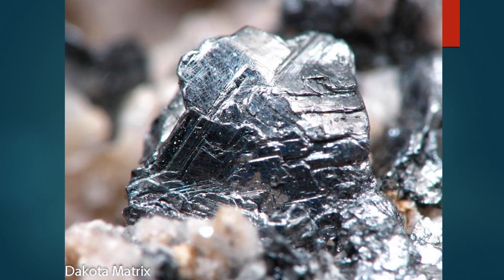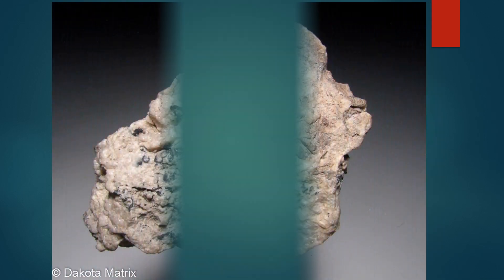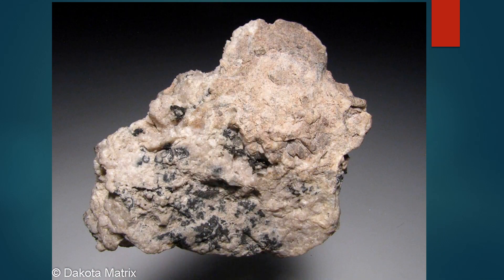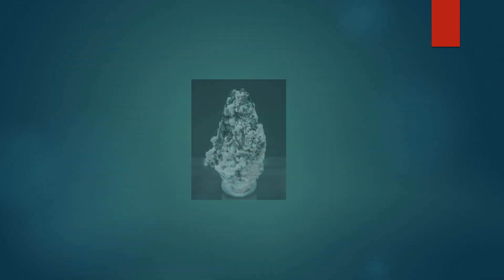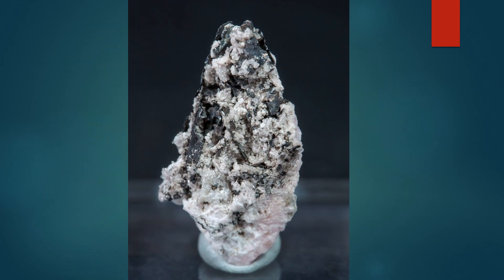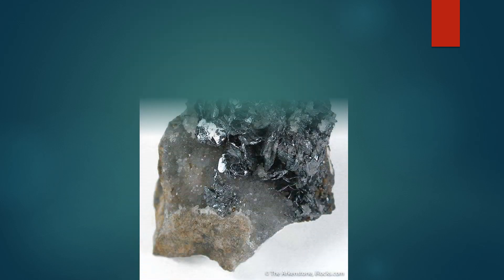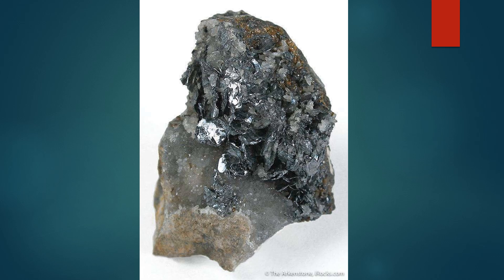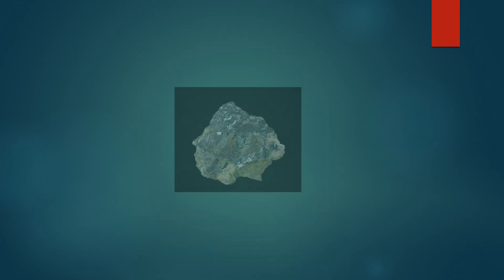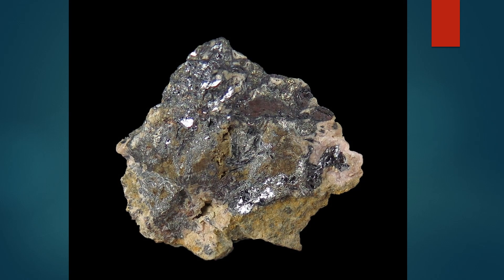Extraction and processing: due to its complex composition, nagyagite is more challenging to process than other gold ores. It usually requires roasting and complex chemical treatments to separate the gold and other valuable metals from the telluride and sulphide structure. Nagyagite is primarily mined for gold recovery and occasionally for antimony and lead. Although rare and difficult to extract, nagyagite holds economic value in the precious metal mining industry in regions where this mineral is present.